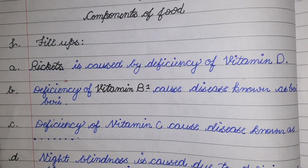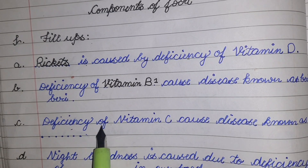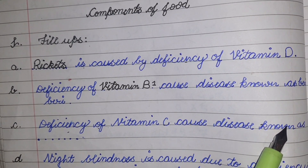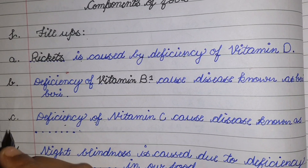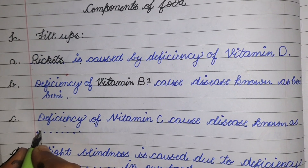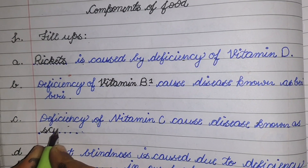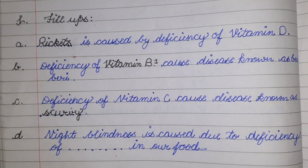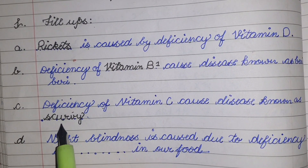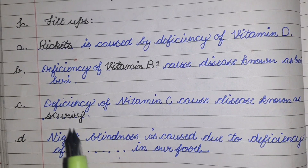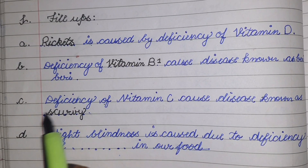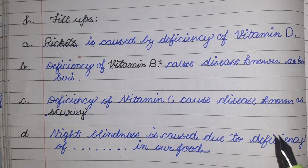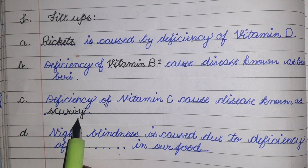Our next question is: deficiency of Vitamin C causes a disease known as — the answer is scurvy. This question is asking which disease is caused by the deficiency of Vitamin C, and the answer is scurvy.